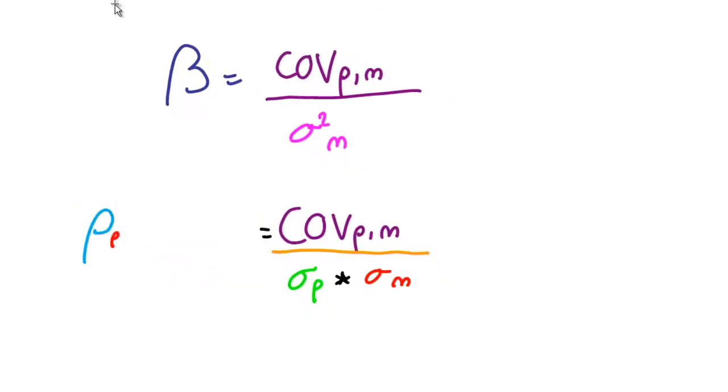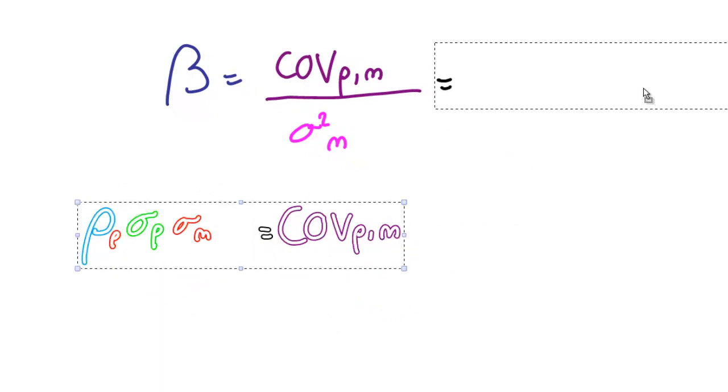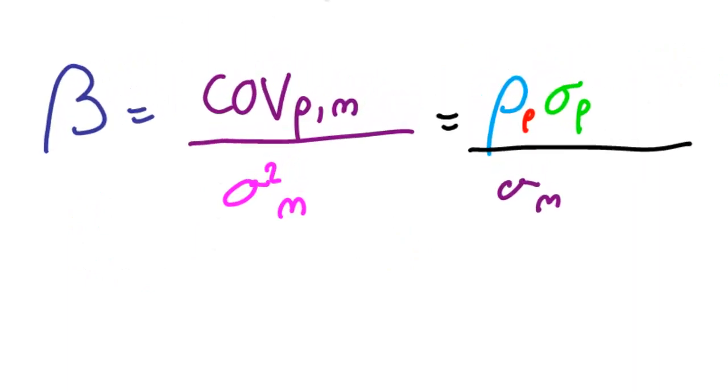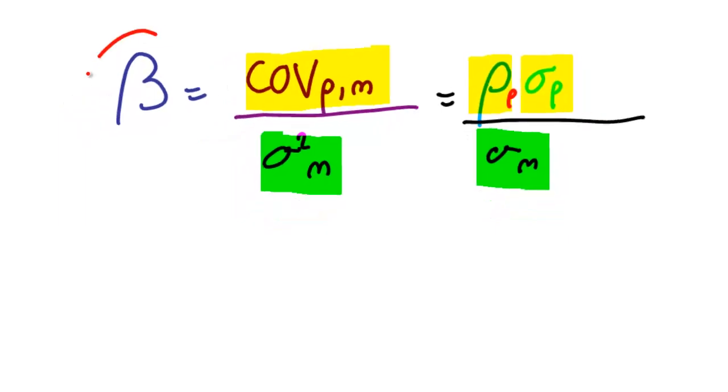So let's rearrange this equation to get covariance by itself. Once we've got that done, we can rearrange the basic beta equation to figure out a different way of getting to beta. So basically, as long as we've either got the covariance and the market variance, or the correlation and its two related standard deviations, we can always get to beta.